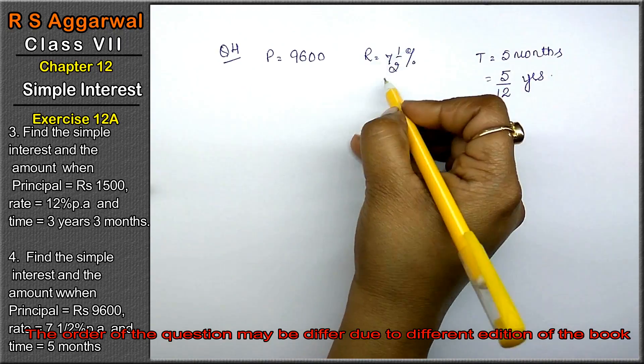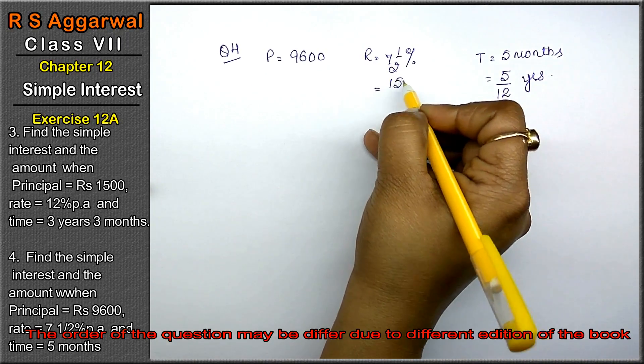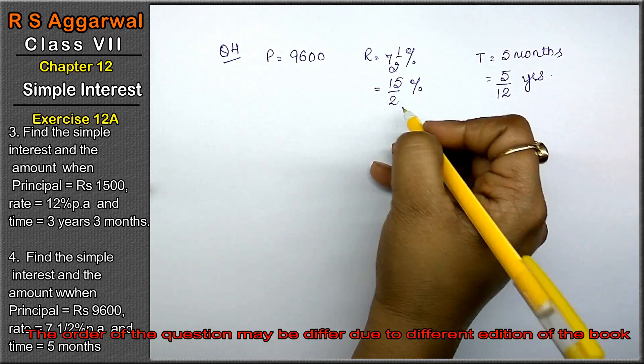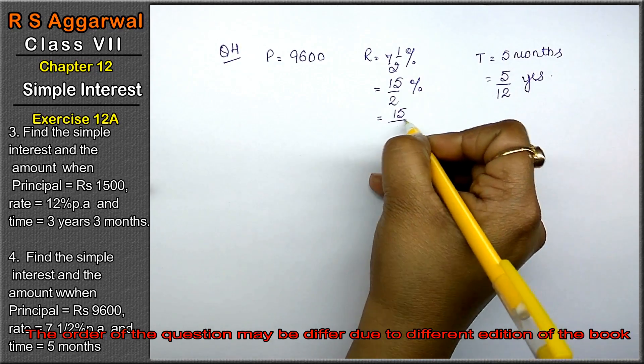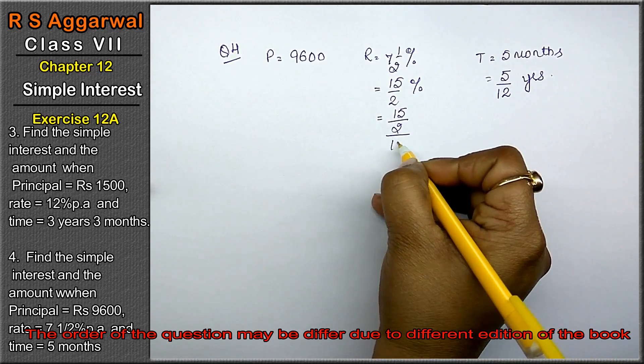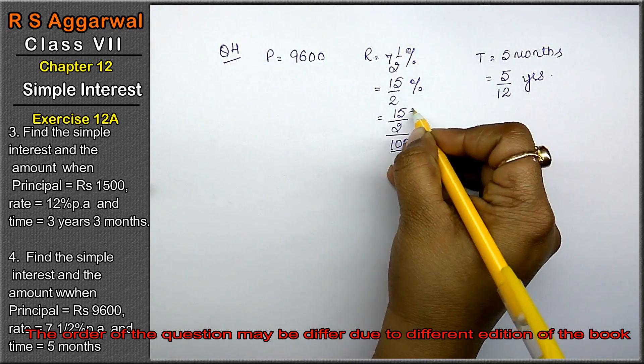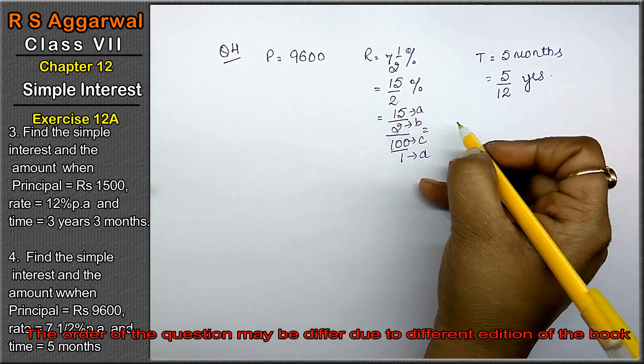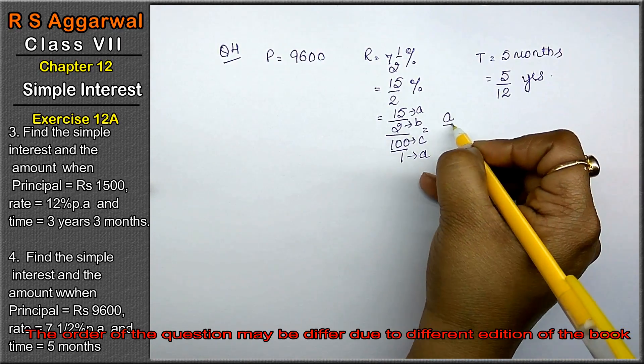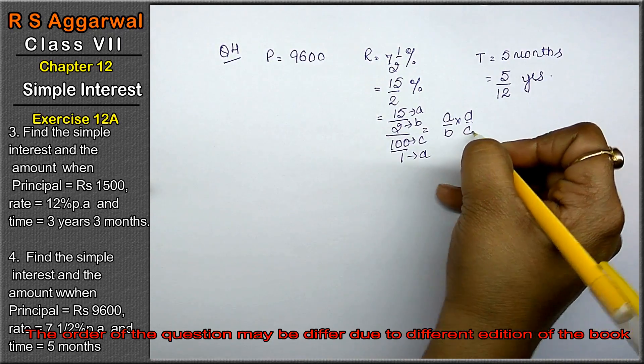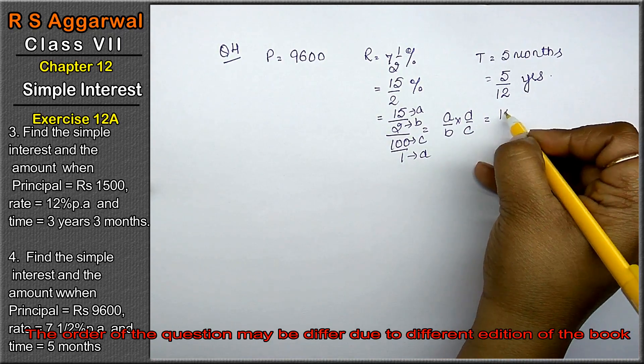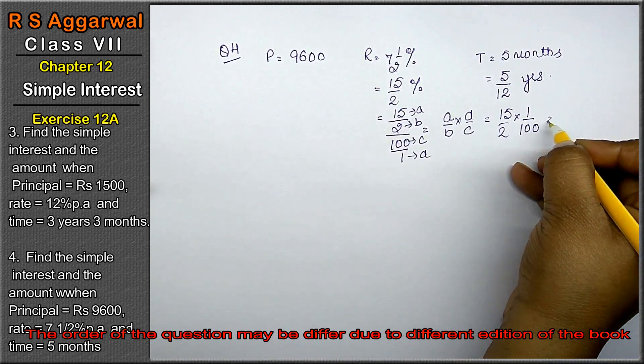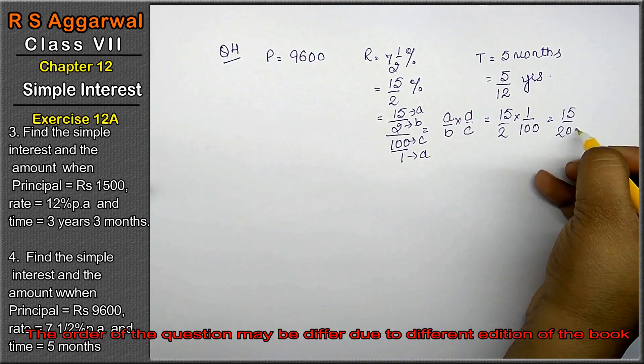Rate conversion: 7 whole 1 upon 2 is 15 upon 2%. Converting to decimal: 15 upon 2 upon 100, which equals 15 upon 200%.